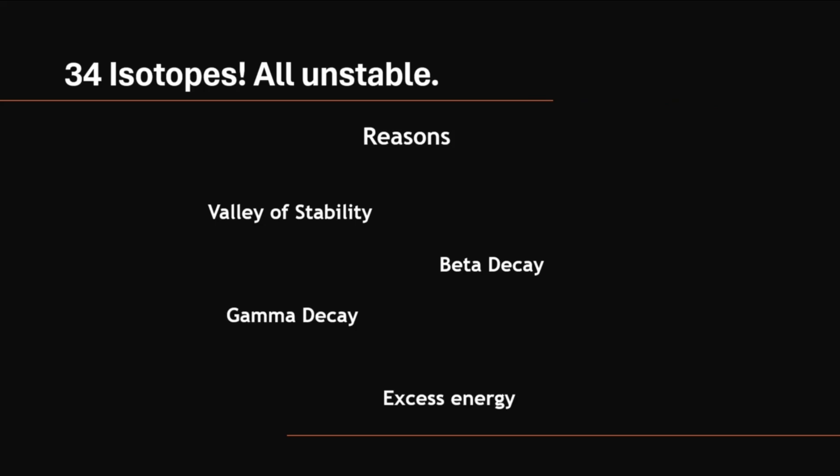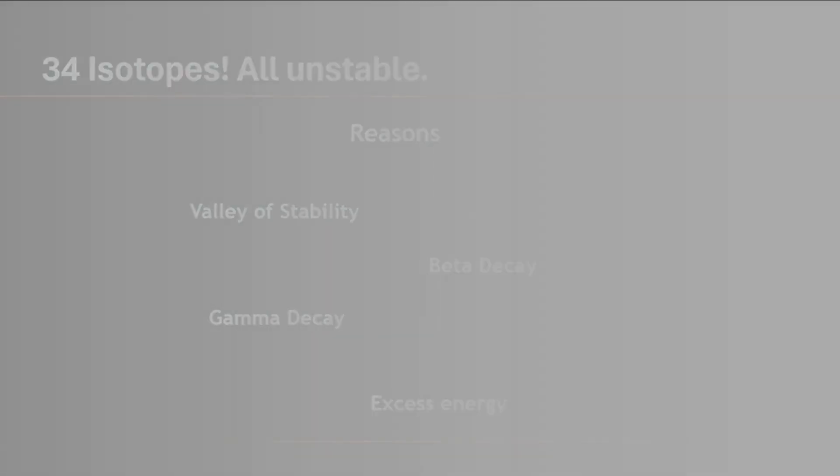Despite technetium having 34 different isotopes, its neutron number is either too far away from the valley of stability, or it is prone to beta decay because of the excess energy it contains. Technetium's radioactivity fascinates chemists because of its incredibly low mass. Its properties allow us to further grasp the reasoning behind the decay of synthetic elements.